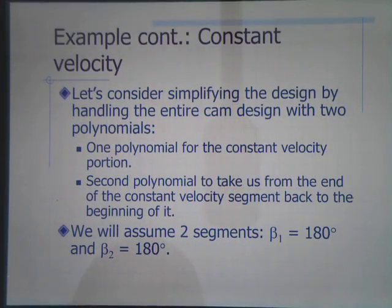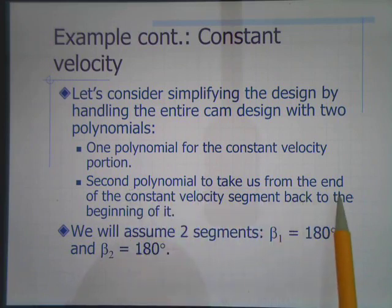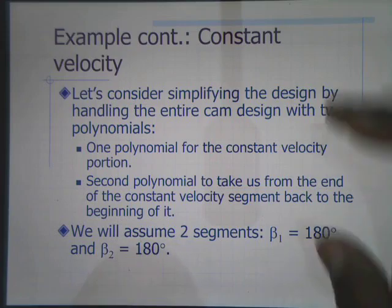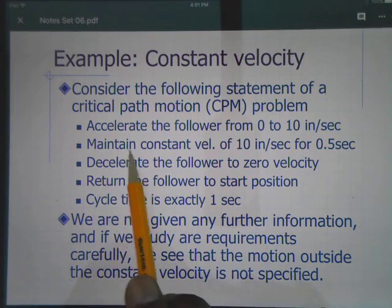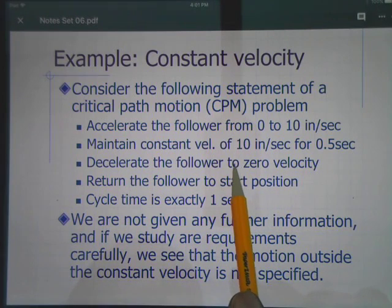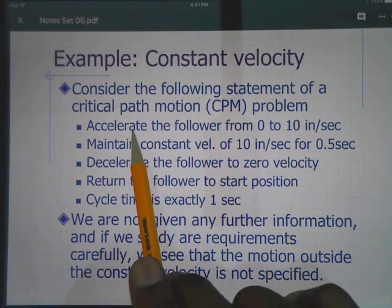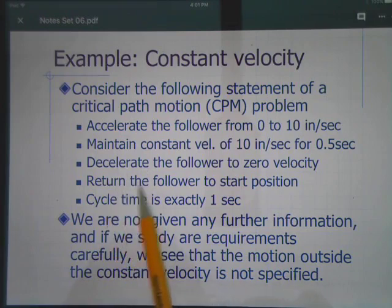Let's consider simplifying the design by handling the entire cam design with two polynomials: one polynomial for the constant velocity portion, and a second polynomial to take us from the end of the constant velocity segment back to the beginning of it. That first polynomial handles the constant velocity portion. After that, we decelerate, return, and accelerate to start again — all handled by the second polynomial.